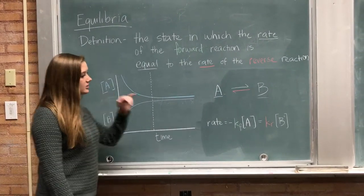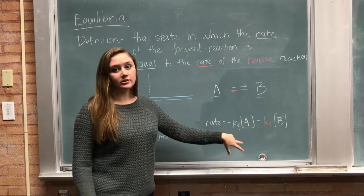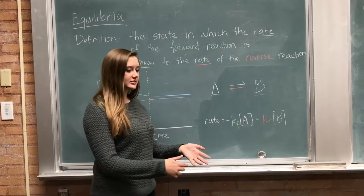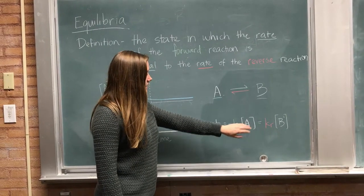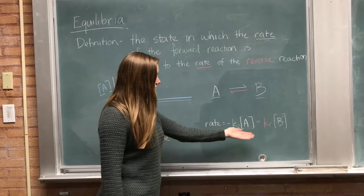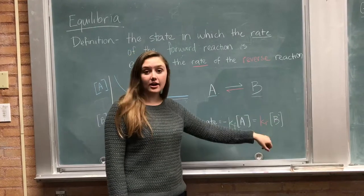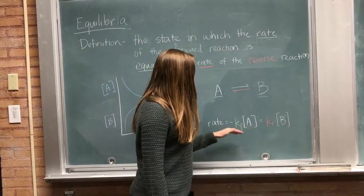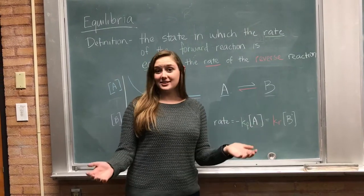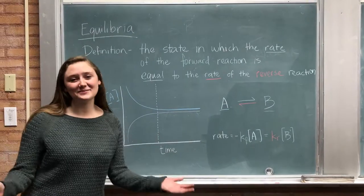And this is because our rate of our forward reaction, if you remember our kinetics lecture a few days ago, our small k, our rate constant, times our concentration of A, as our forward rate, will equal our kr, our reverse rate constant, times our concentration of B. So these rates are equal. Does that make sense? Awesome.